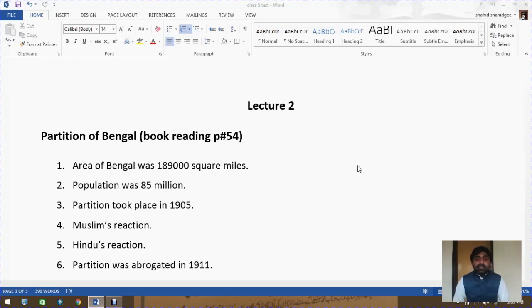Bengal extended over an area of 189,000 square miles with a population of 85 million people. Western Bengal had a population of 54 million people, of whom 42 million were Hindus and 12 million were Muslims. Eastern Bengal and Assam had a population of 31 million people, of whom 18 million were Muslims and 12 million Hindus.